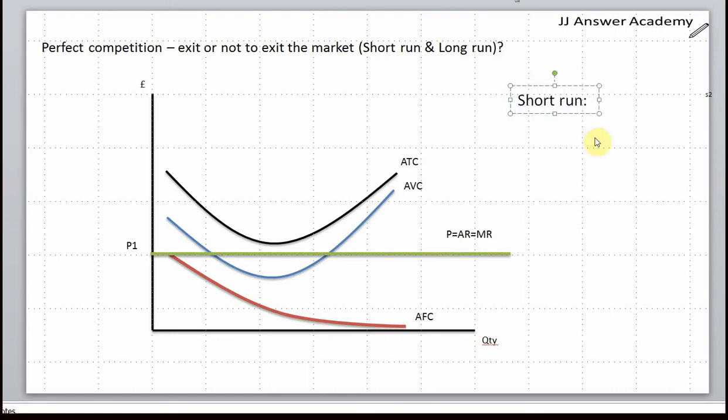So do you think the firm should exit the market or not in the short run? In this diagram, the firm would be manufacturing where marginal revenue equals marginal cost. First of all in the short run, is the firm making profit or loss?